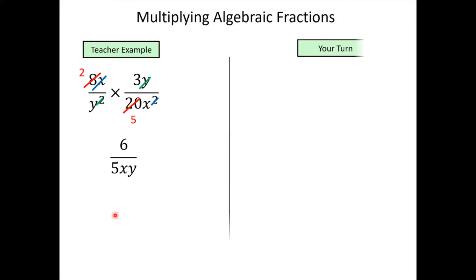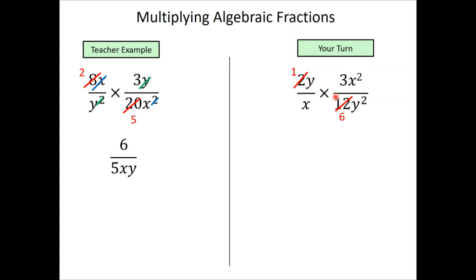Pause the video and try this question for yourselves. Once you've got the answer, play the video and I'll talk you through it. For this question, we can cancel the 2 with the 12 first — dividing both by 2 gives 6. Then the y's will cancel, and one of the x's from x² will cancel with the x. So I'm left with 3x on the numerator and 6y. The 3 and the 6 cancel, giving x divided by 2y.